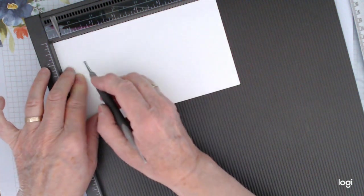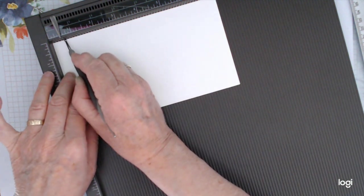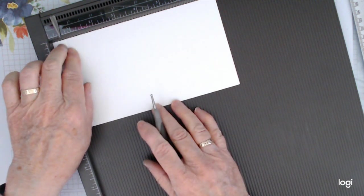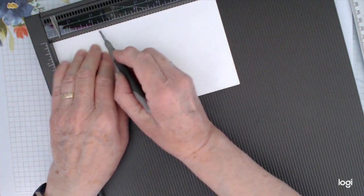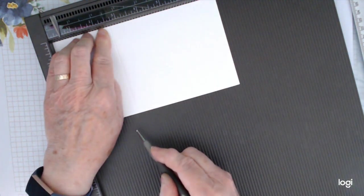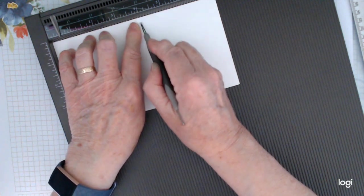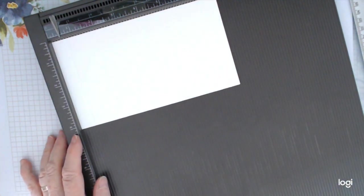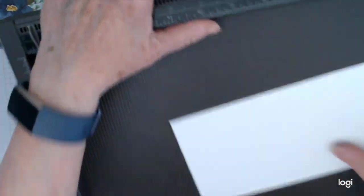And that's scored for that one done. We'll just score our band here, our box cover, while we're at it. It needs a score at 5/8, 2 and 5/8, 4 inches, and 6 inches.